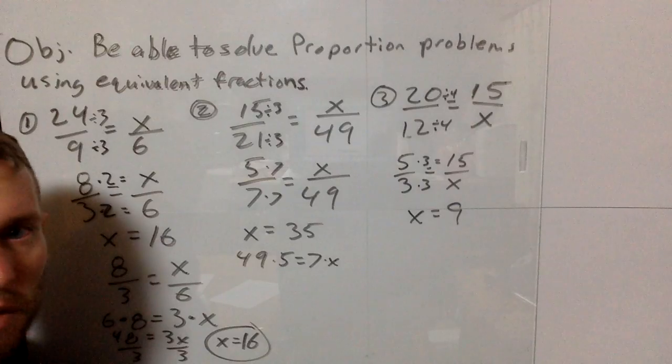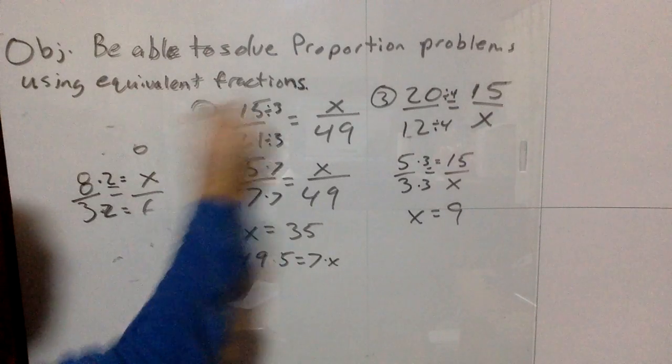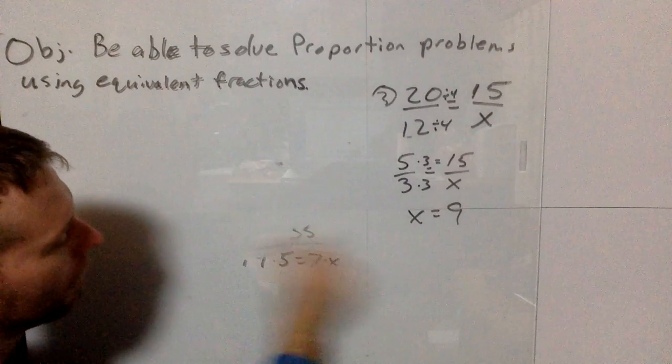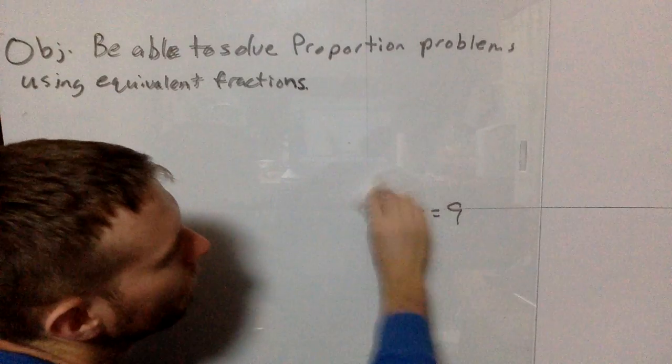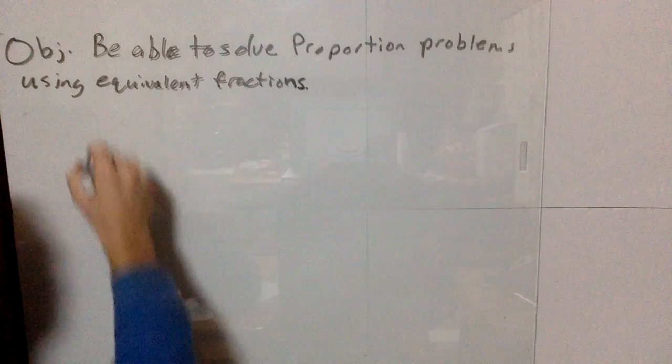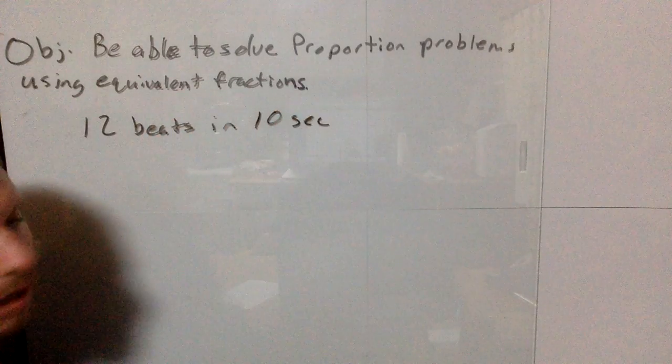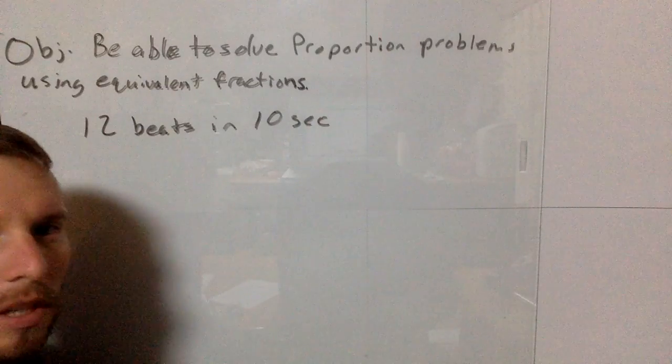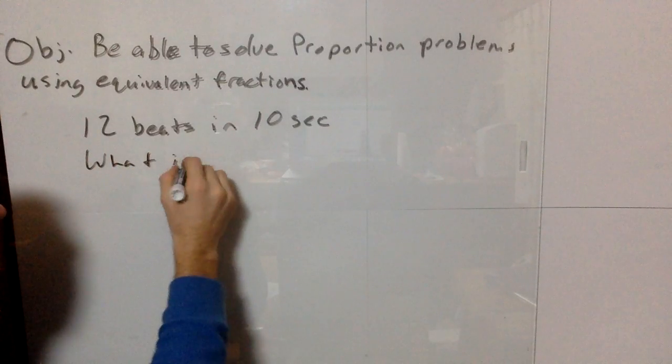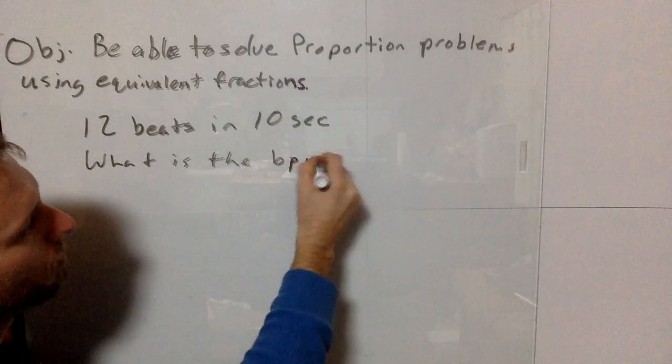Two ways of solving proportions using equivalent fractions. Now let's do some word problems. Say I want to take my heart rate but don't want to count beats for a whole minute to save time. I take my heart rate and get 12 beats in 10 seconds.